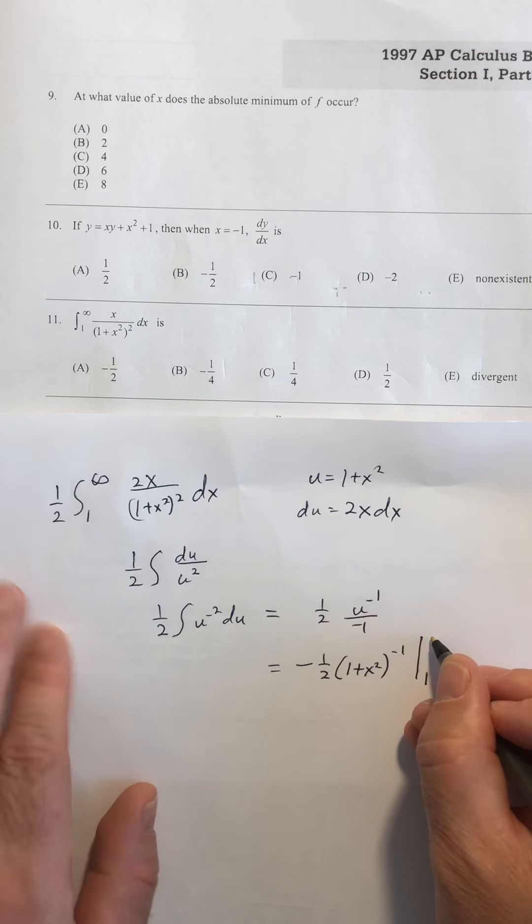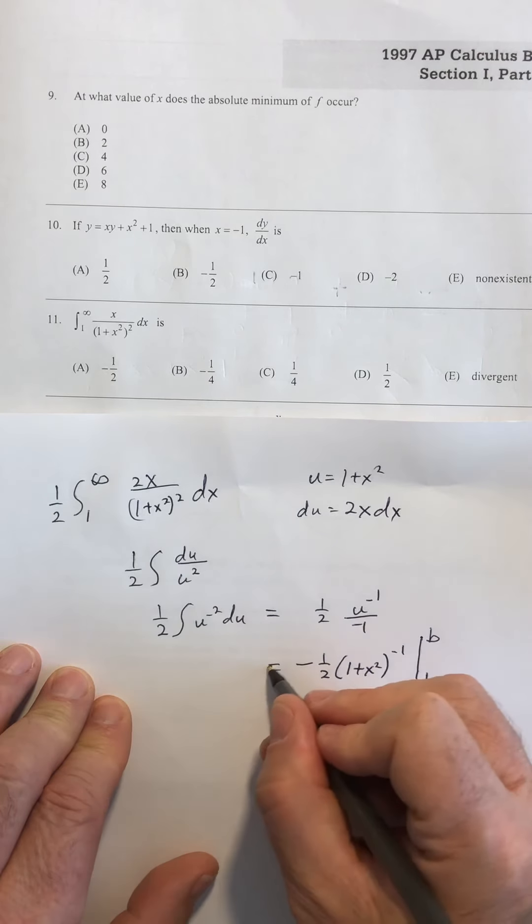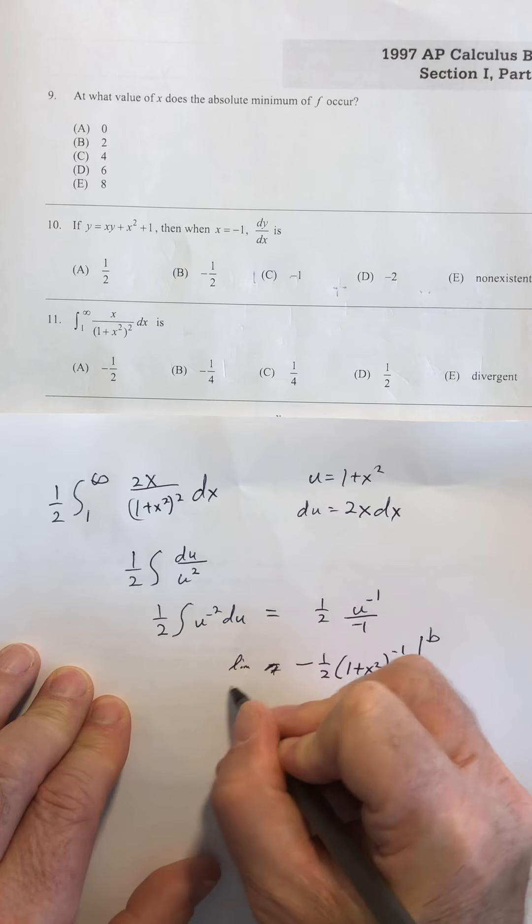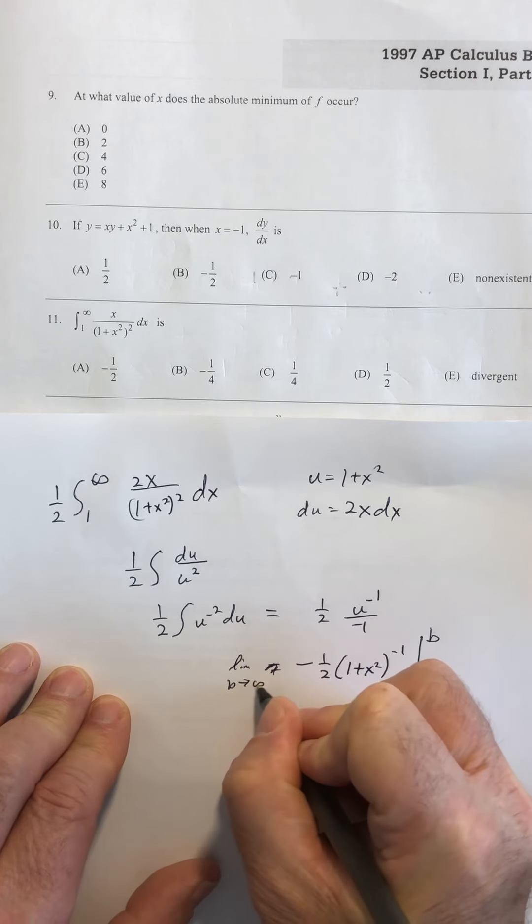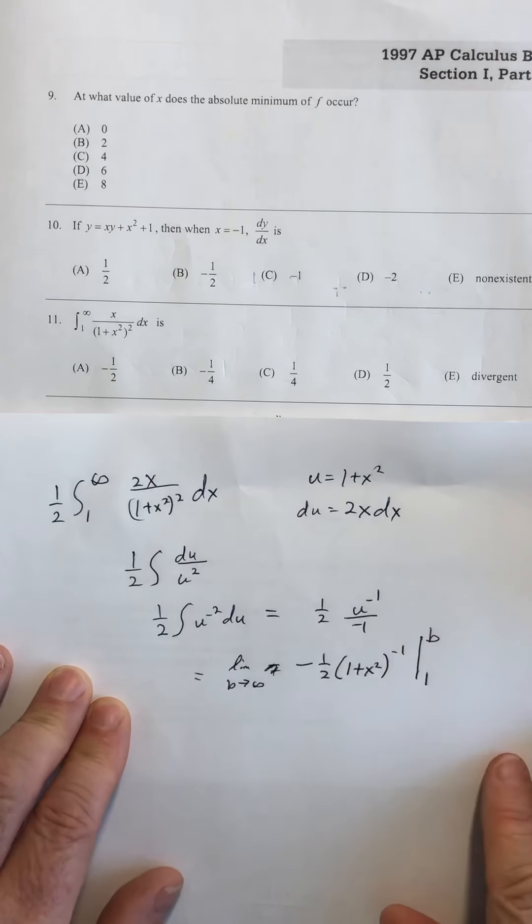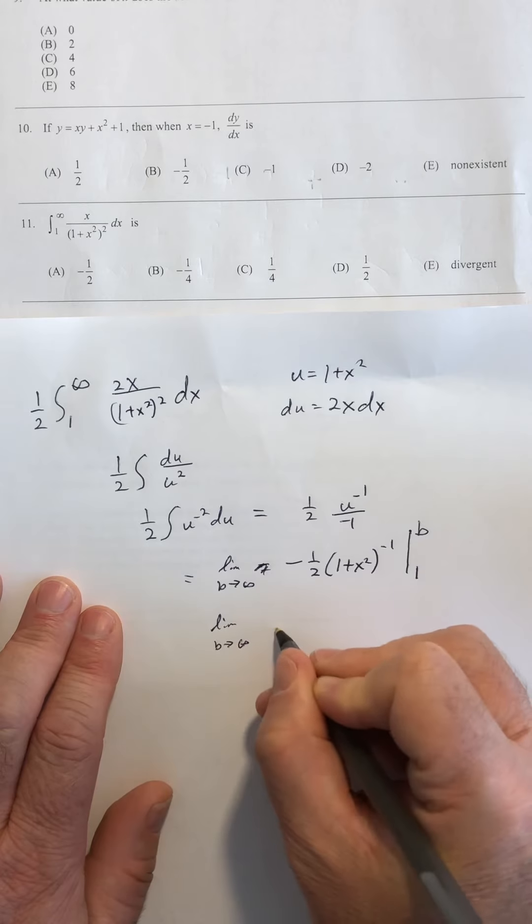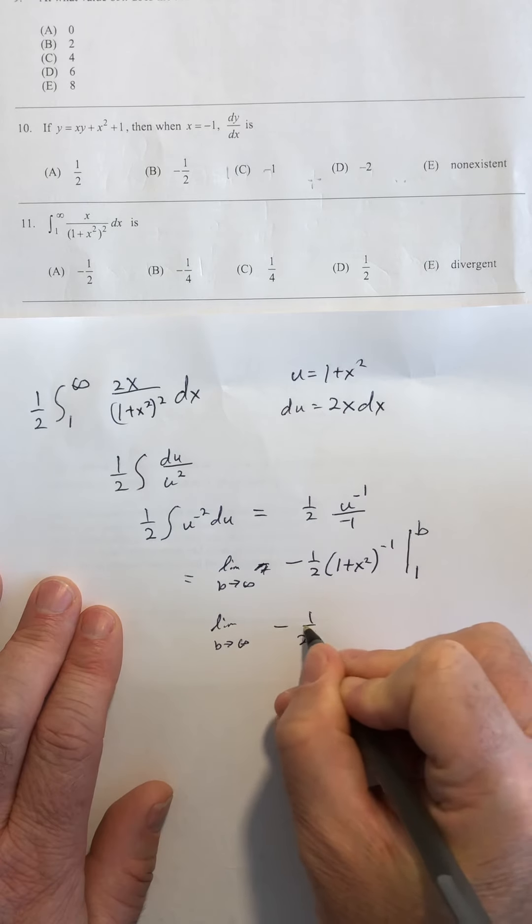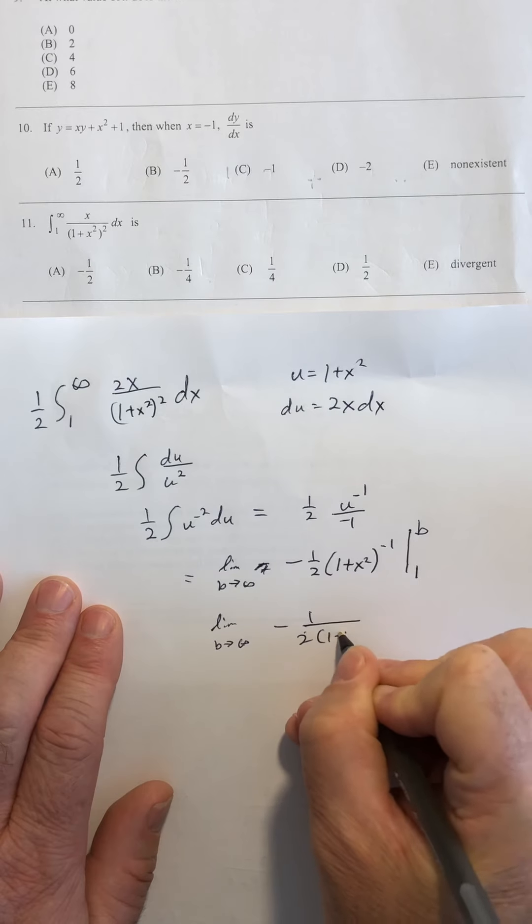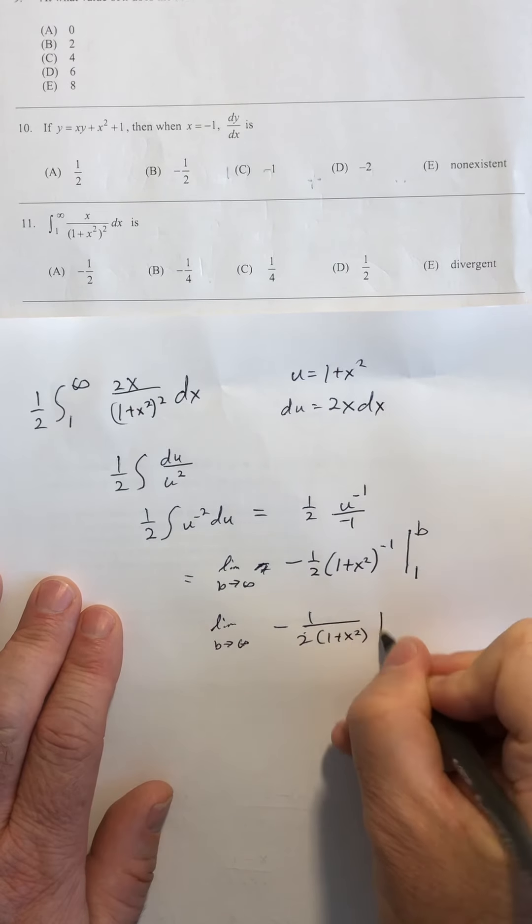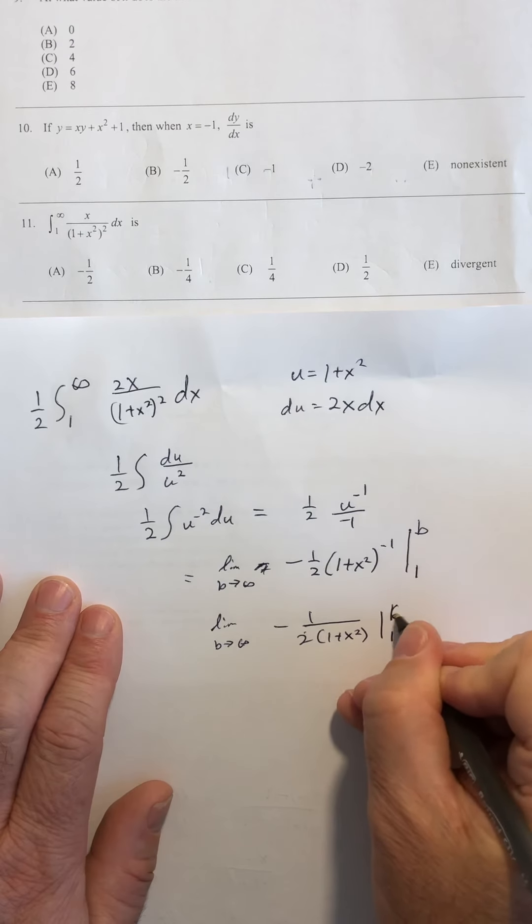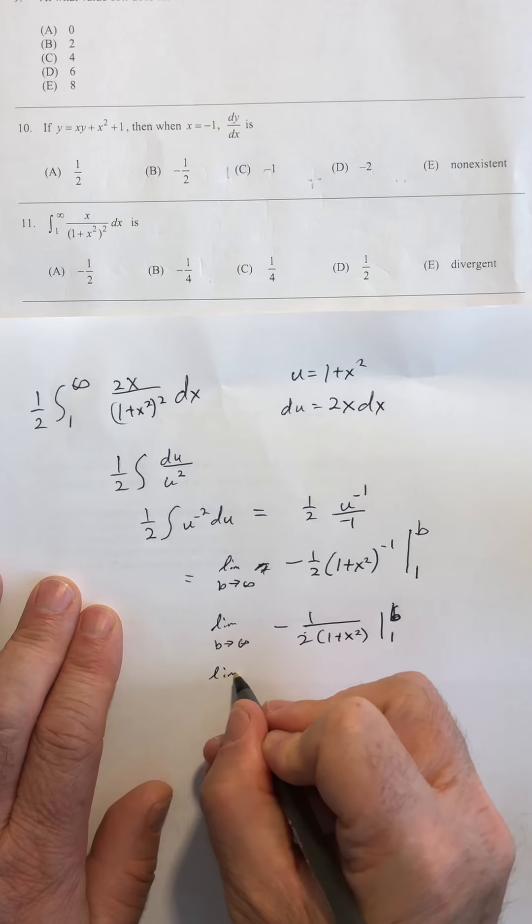Remember that I can't use infinity as a number, so I'm going to change that to b and take a limit as b goes to infinity. Limit as b goes to infinity of negative 1 over 2 times 1 plus x squared. Evaluated it at 1 and at b. So I have a limit problem.